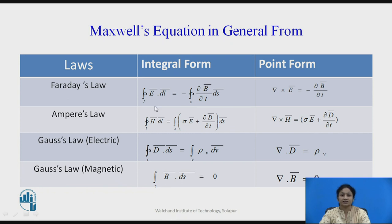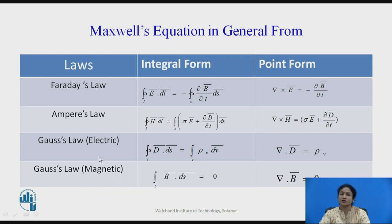The summary table contains columns representing Maxwell's equations in integral form and Maxwell's equations in point form. These are the general forms derived from Faraday's law, Ampere's law, Gauss's law in the electric field, and Gauss's law in the magnetic field.